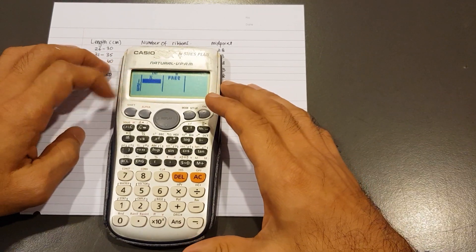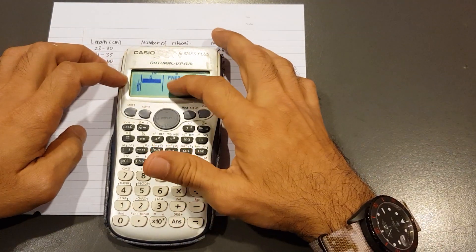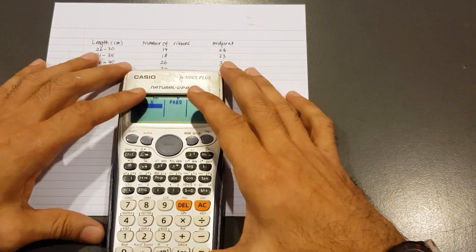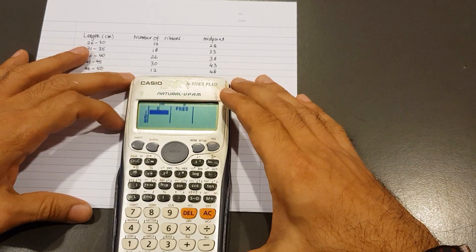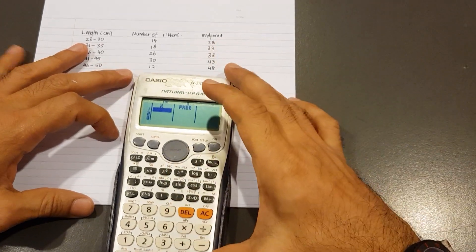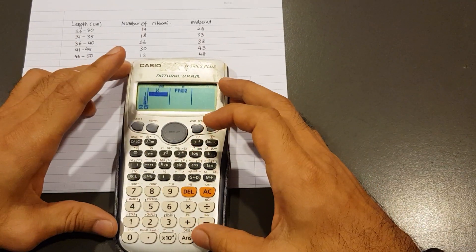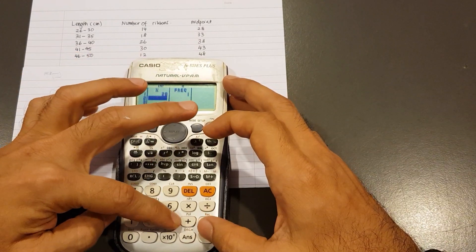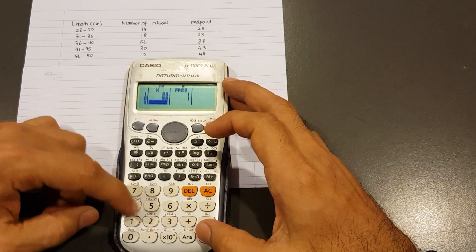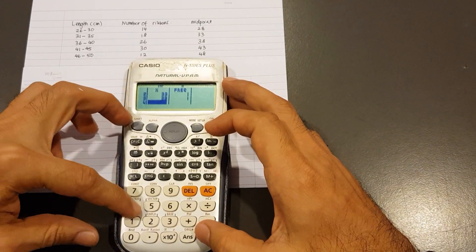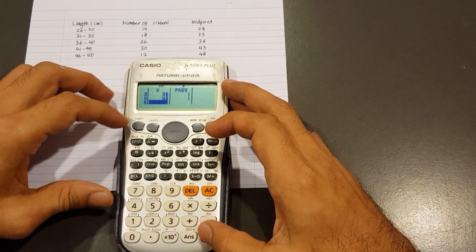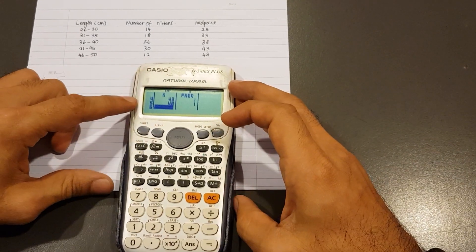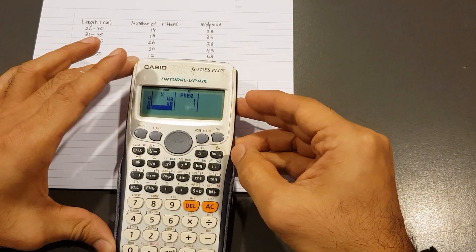Now I've got two columns - one for X and one for frequency. X is for midpoint, frequency is the number of ribbons. I'm going to key in these values now. The midpoint, starting with 28. So 28, equals - it jumps down to the next row. Next one, 33, equals. Next one, 38, 43, 48. I've got 5 rows there.